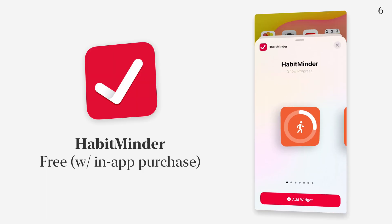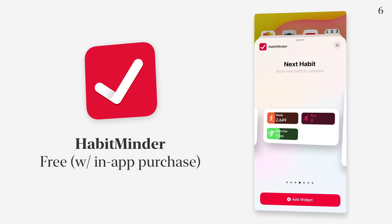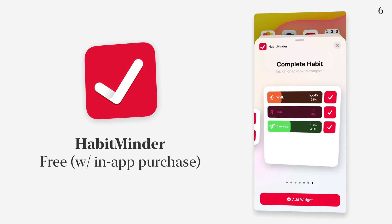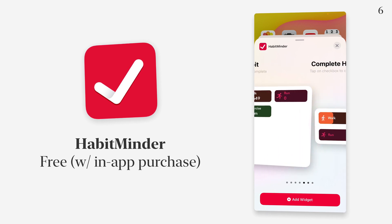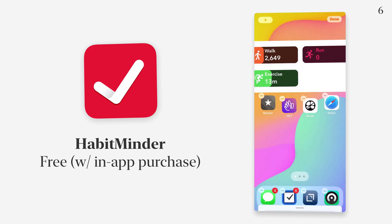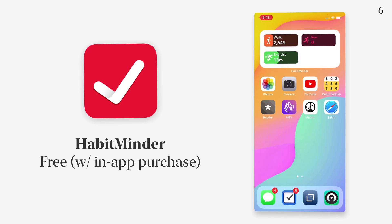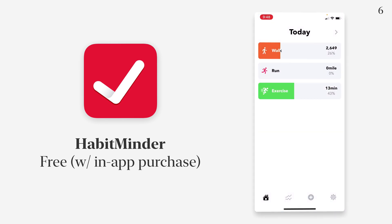Habitminder is a cool app that I just recently discovered that lets you track certain habits you want to embrace. There are tons of options and many different sizes of widgets. I'm going to go with this medium-sized one, where I can see my walk status, my run, and my exercise for the current day. And of course I can tap into it to see an update on how those are all going.